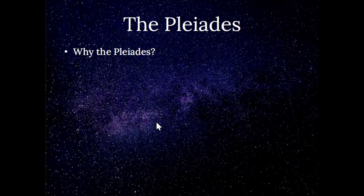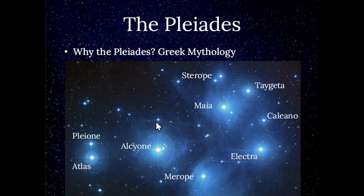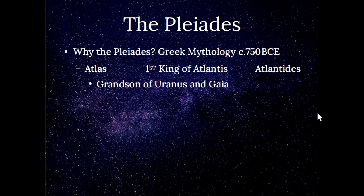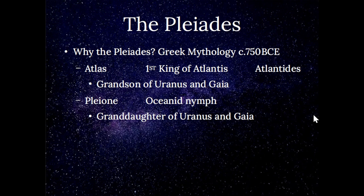So why the Pleiades? Let's have a quick look at the star group — these are the seven sisters, probably nine stars brightly, with these two on this side being the parents: Atlas and Pleione. Atlas was the first king of Atlantis, and sometimes the Pleiades are called the Atlantides, which shows the antiquity and importance of the star group. Atlas was the grandson of Uranus and Gaia, as was his consort Pleione. Uranus in Welsh means 'the god who contained the universe.'